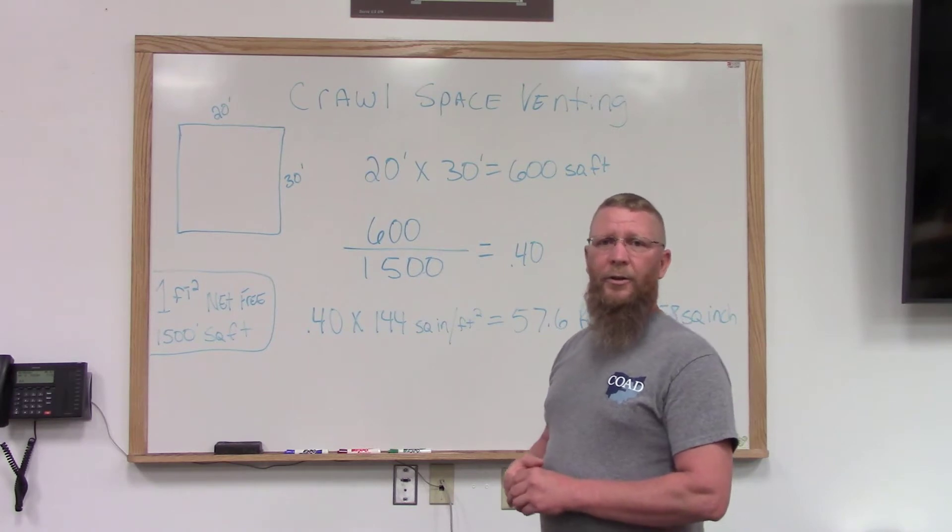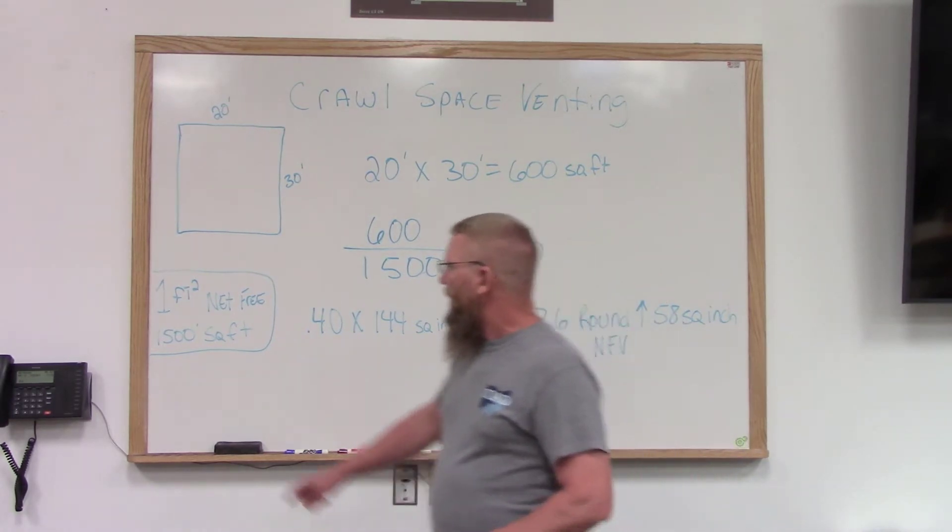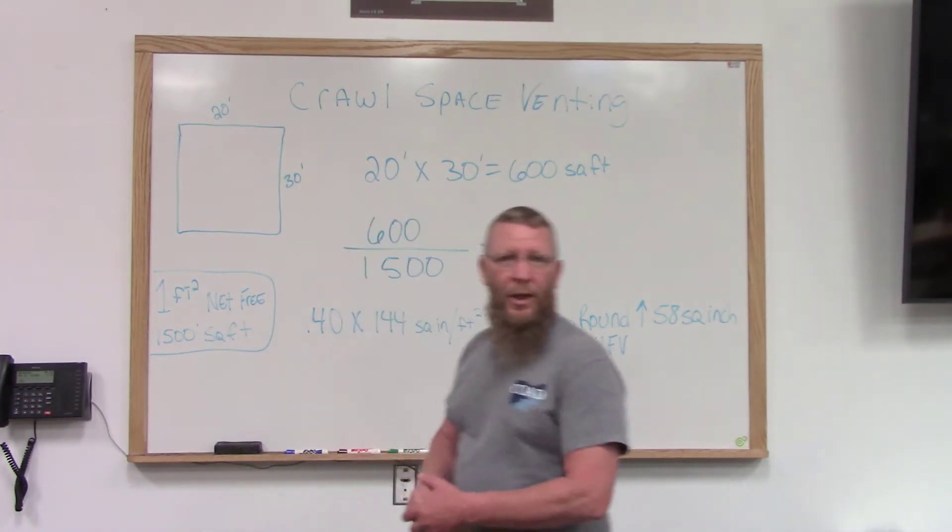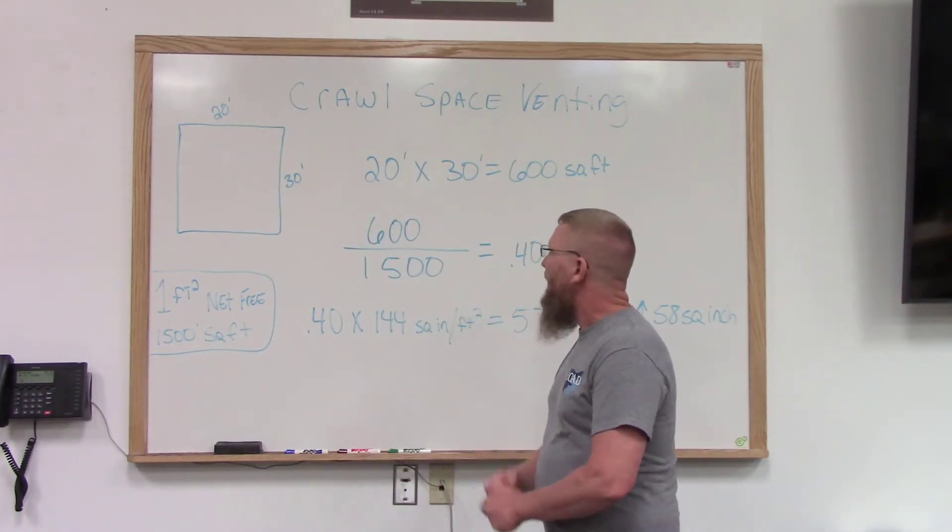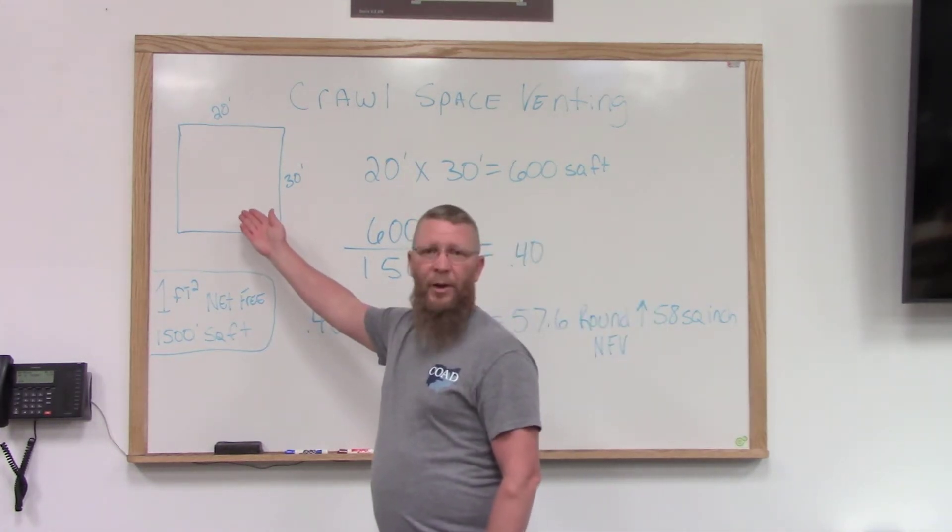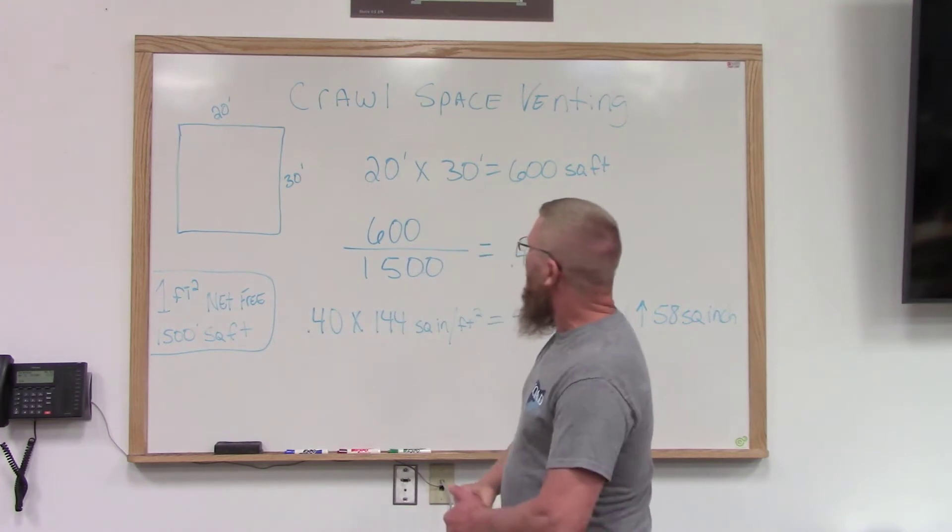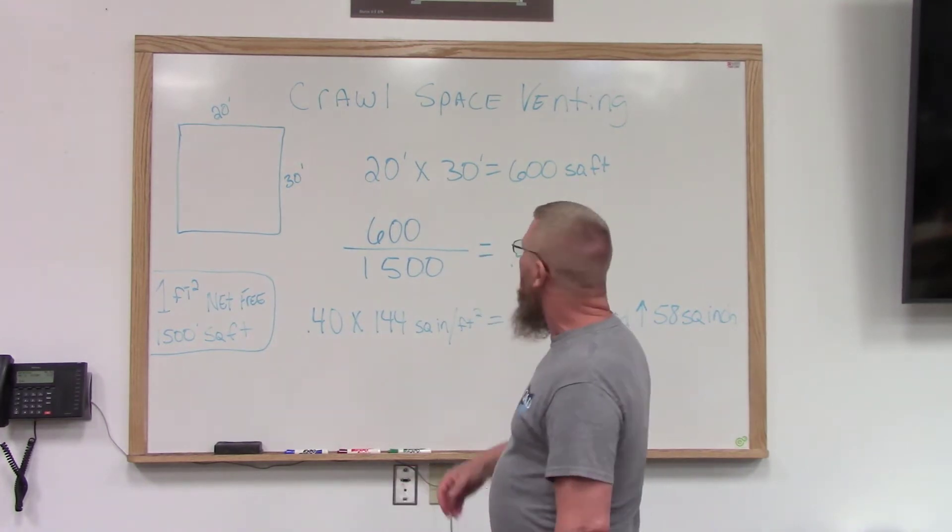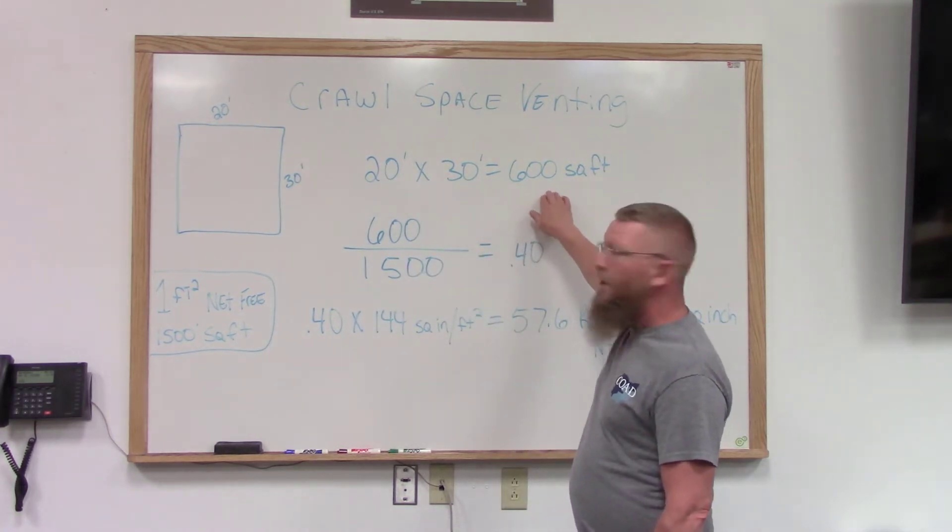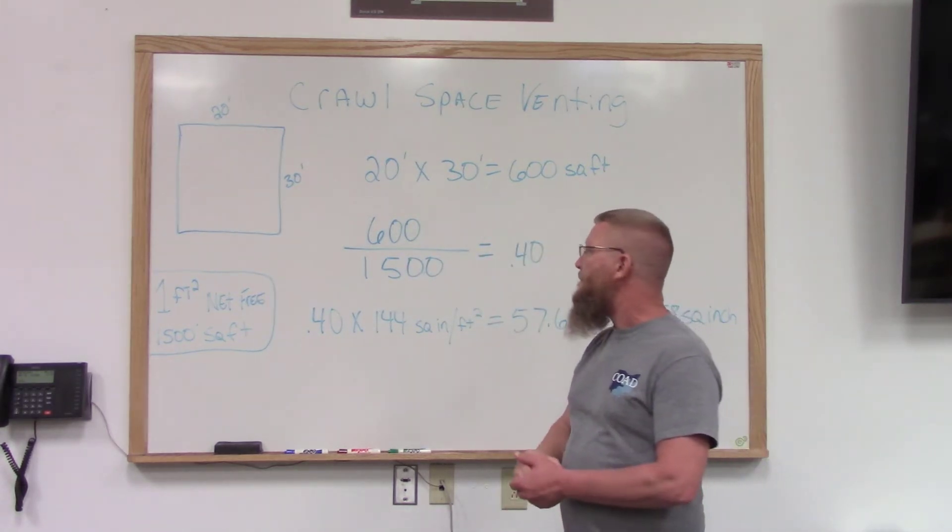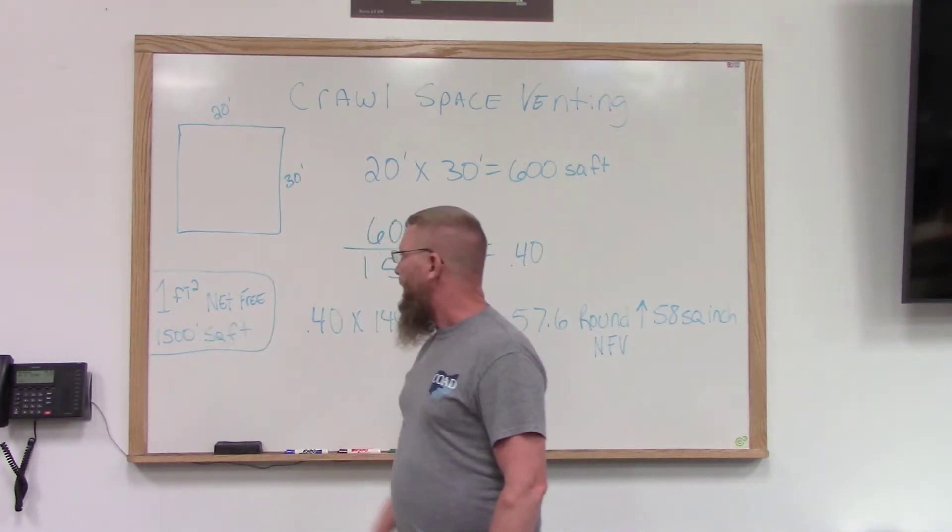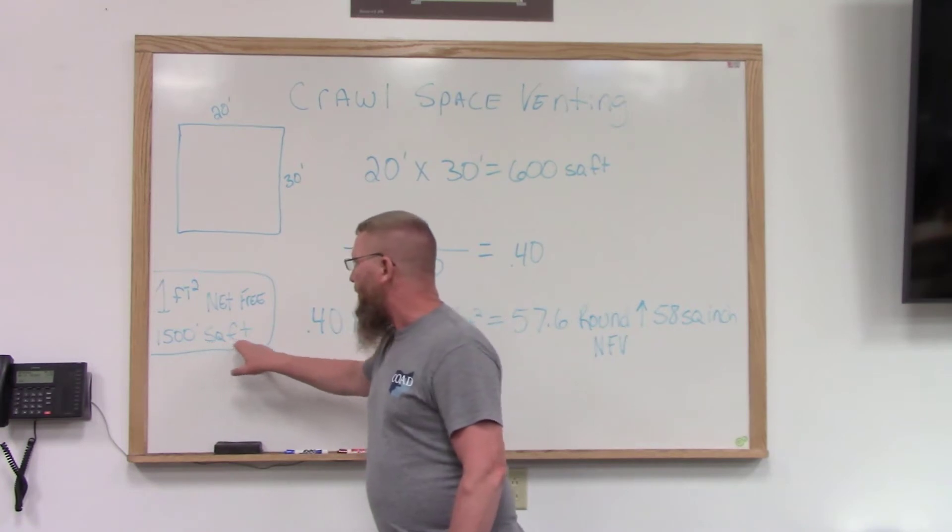The formula for figuring out crawl space ventilation is one square foot of net free venting for 1,500 square feet of crawl space. We're just going to use this as an example. I've got a crawl space that's 20 foot by 30 foot, so we'll try to find the area of that. And that comes up to 600 square feet. Well again, the formula, I need one square foot of net free venting for 1,500 square feet.